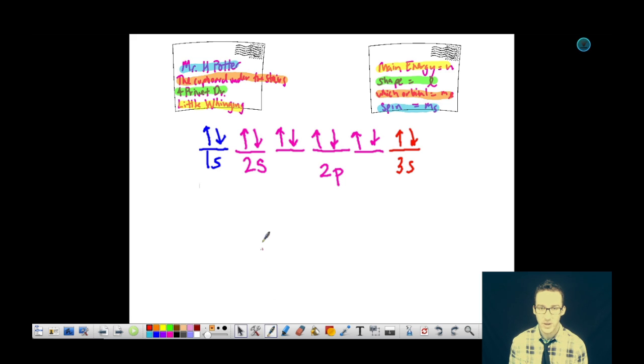The first one corresponds to the main energy level that electron is in. The second one, what shape orbital. The third one, what orientation - which particular orbital are we talking about? And the fourth one is the spin.